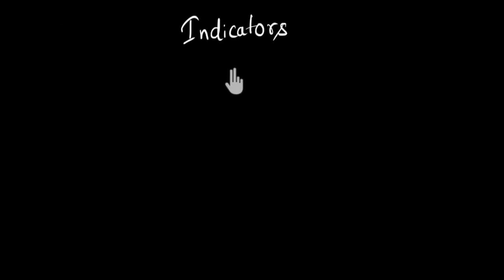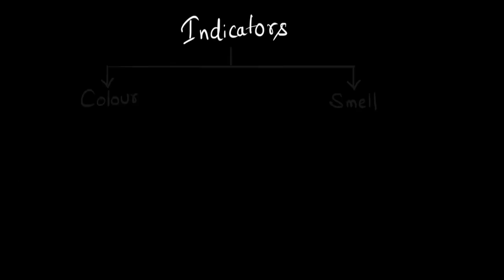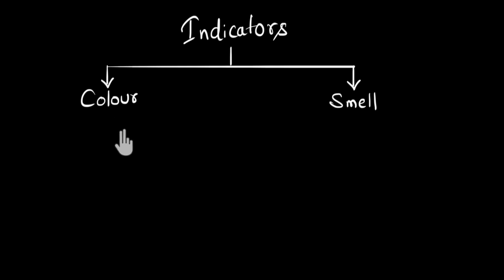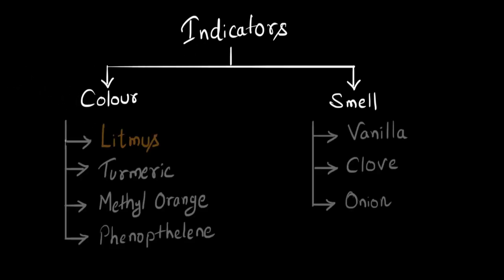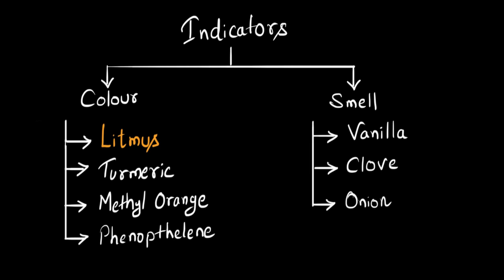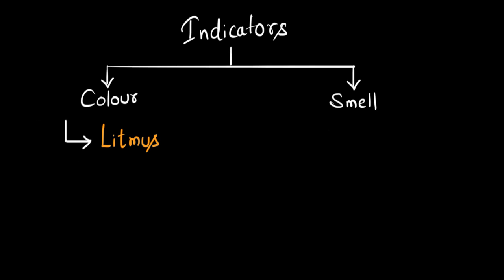Indicators are compounds that tell us whether a given solution is acidic or basic. When an indicator comes in contact with an acid or a base, it will either change its color or its smell to let us know. Litmus is a type of indicator that changes its color. There are many more indicators apart from litmus, but we will talk about them in a separate video. In this video, we are only going to talk about litmus indicator.